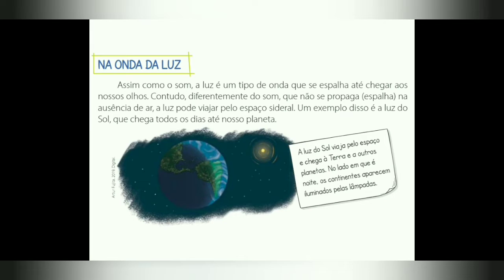Continuando, página 22: 'Na onda da luz'. Assim como o som, a luz é um tipo de onda que se espalha até chegar aos nossos olhos. Contudo, diferentemente do som, que não se propaga na ausência de ar, a luz pode viajar pelo espaço sideral. O som não se espalha onde não tem ar, mas a luz já se espalha mesmo com a ausência de ar, como ocorre no espaço sideral. Um exemplo disso é a luz do Sol, que chega todos os dias até o nosso planeta. A luz viaja pelo espaço até chegar à Terra e a outros planetas.